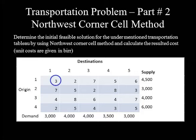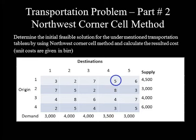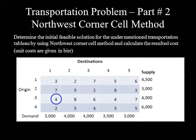The values in the table are unit costs for transporting a single product from a certain origin to a particular destination area. For example, 3 represents the cost from Origin 1 to Destination 1; 2 from Origin 1 to Destination 2; 7 from Origin 1 to Destination 3; 5 from Origin 1 to Destination 4; 6 from Origin 1 to Destination 5. 4 represents the cost from Origin 3 to Destination 1, and so on.